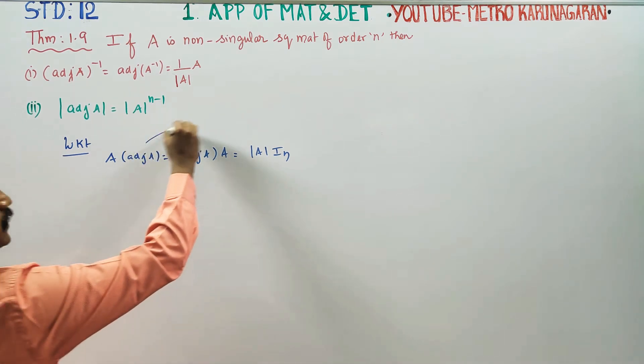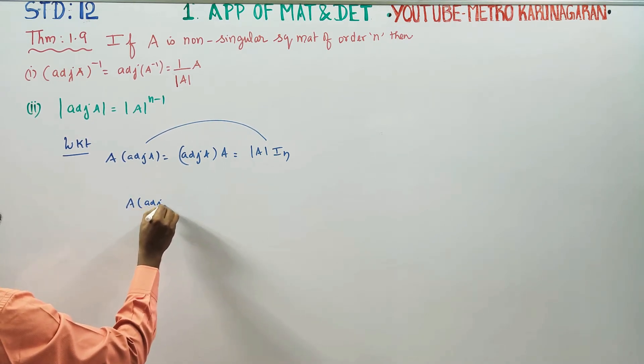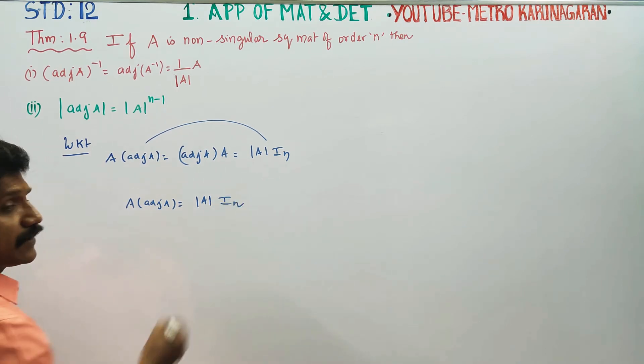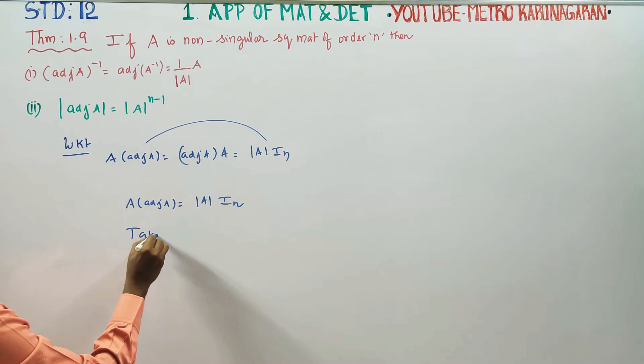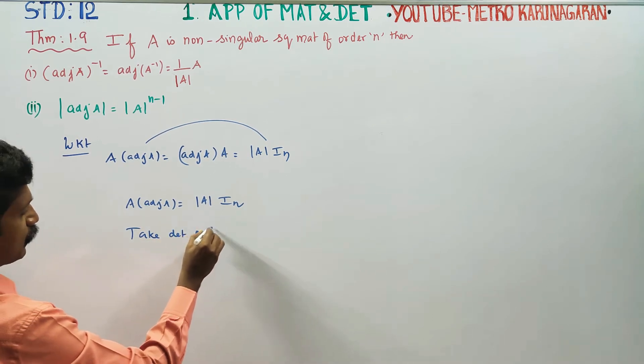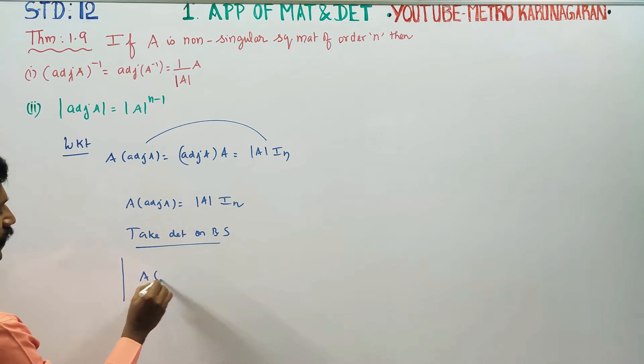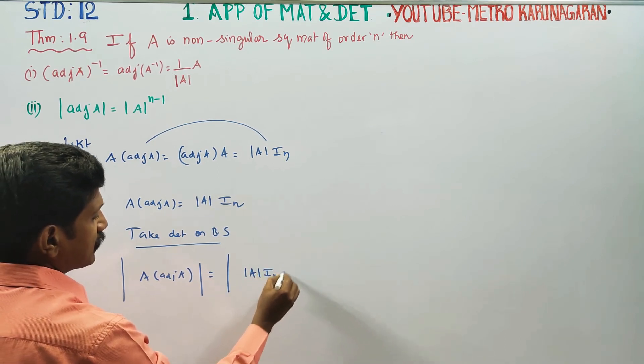I am going to take determinants on both sides. Determinant of A into adjoint A is equal to determinant of determinant A into I_N.